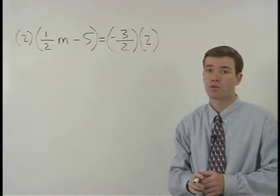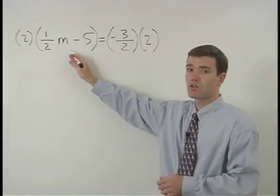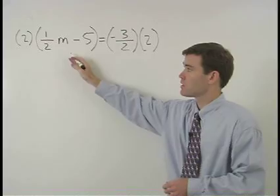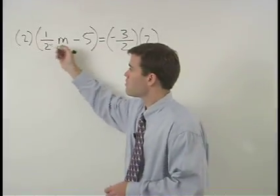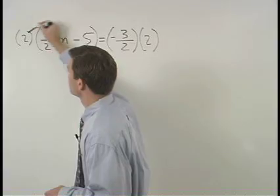Now here's what you have to watch out for. There are two terms on the left side of the equation. So this 2 must distribute through both terms.